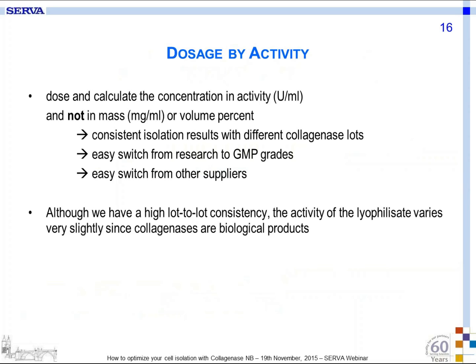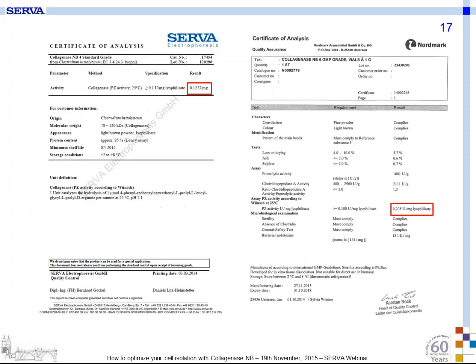We highly recommend dosing all our collagenases and Neutroproteases by activity. Some people are used to dosing in volume percentage, but by using the enzymes by activity, you will get consistent cell isolation results across different collagenase lots. You can easily switch from research to GMP grade from Serva, and also switch from collagenases from other suppliers, since you always apply the same activity to the cells. Although we have high lot-to-lot consistency, activities of each lot may vary as collagenases are biological products. The PZ activity is marked in red on the COA, and this is the value you need to calculate your enzyme solutions and to use the enzymes by units.